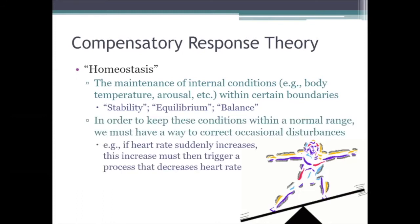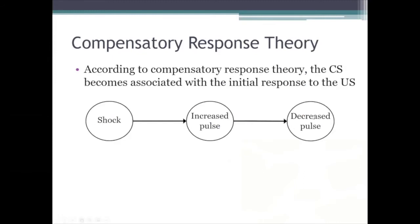Sometimes we encounter stimuli that disrupt that stability — that disrupt the balance we're trying to maintain. For example, electric shock causes a pretty dramatic increase in heart rate, elevating it beyond the upper boundary of the range the animal is trying to keep its heart rate within. So in order to maintain that balance, a homeostatic system has to have some way to counteract occasional disturbances like that — when heart rate increases, that needs to trigger a process that brings heart rate back down into its normal range. According to compensatory response theory, it's that after-reaction — that homeostatic rebound response — that the conditioned stimulus acquires the ability to elicit.